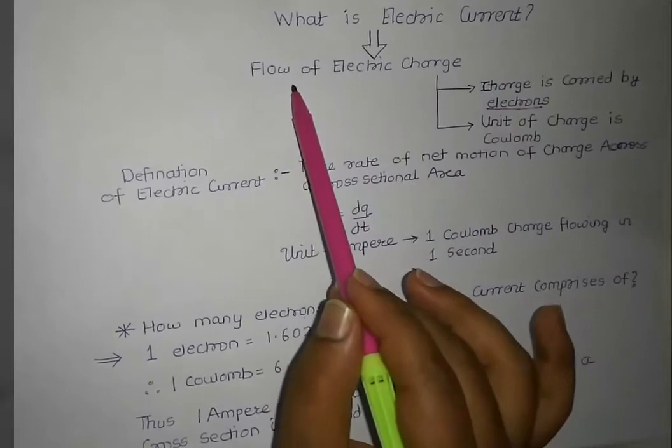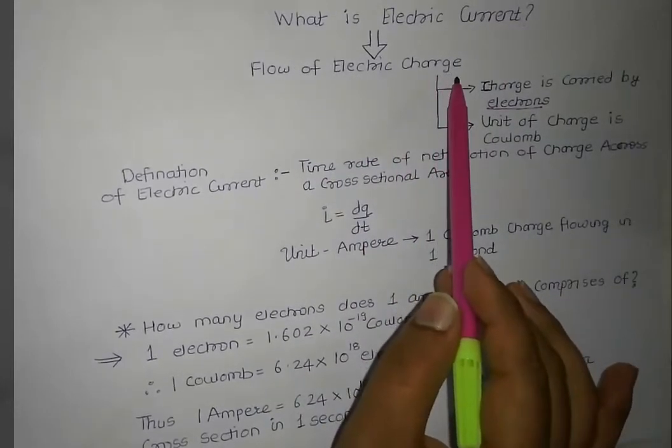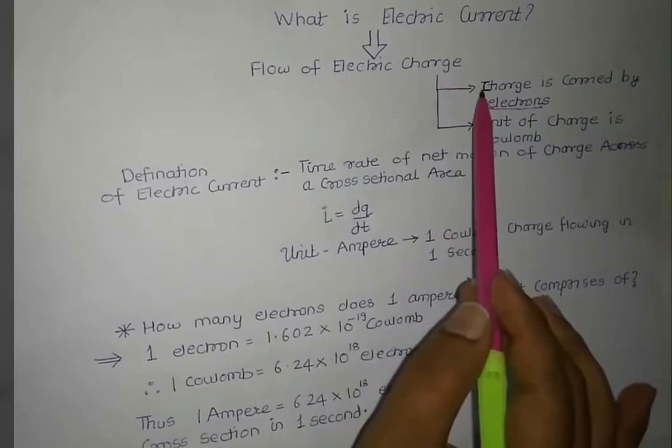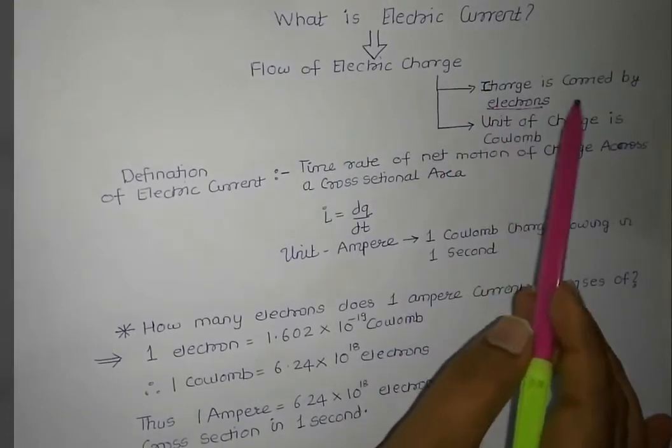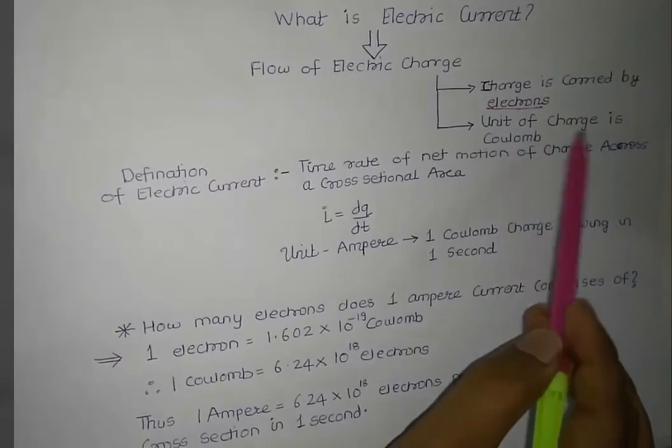Electric current is basically the flow of charge through any cross sectional area. The charge is carried by the electrons. Unit of charge is Coulomb.